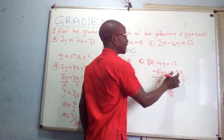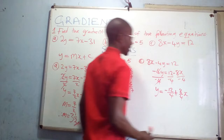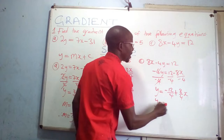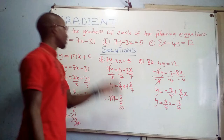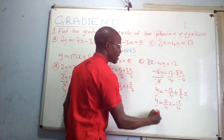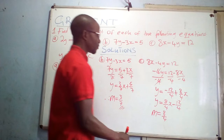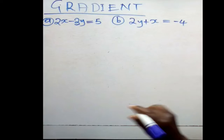After dividing by -4, you get y = (8/4)x - 12/4, which simplifies to y = 2x - 3. At this point the equation is expressed in the form y = mx + c. Therefore m = 8/4 = 2. This is the gradient for equation C.